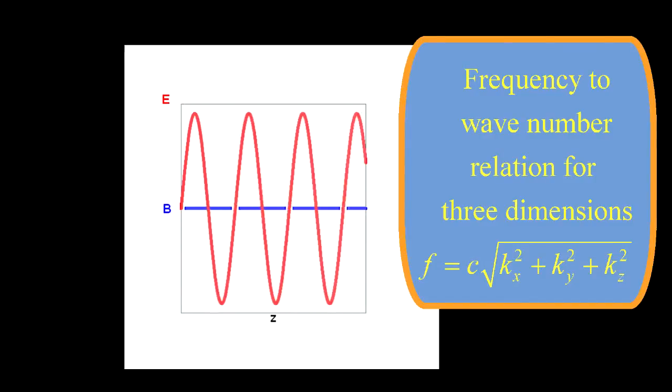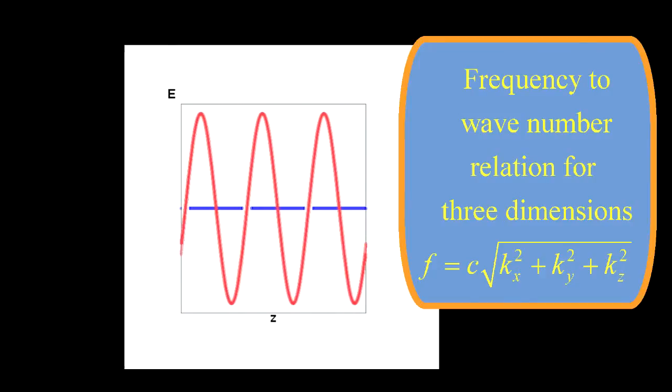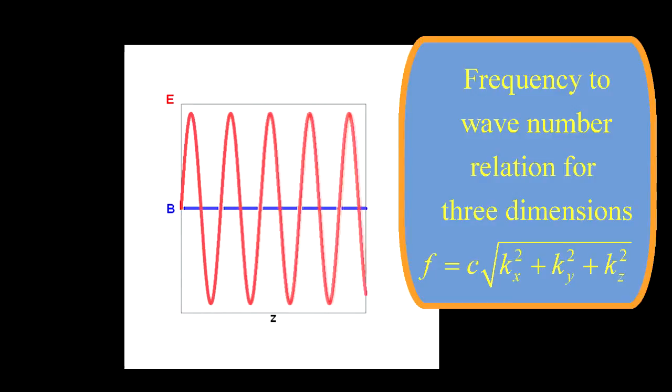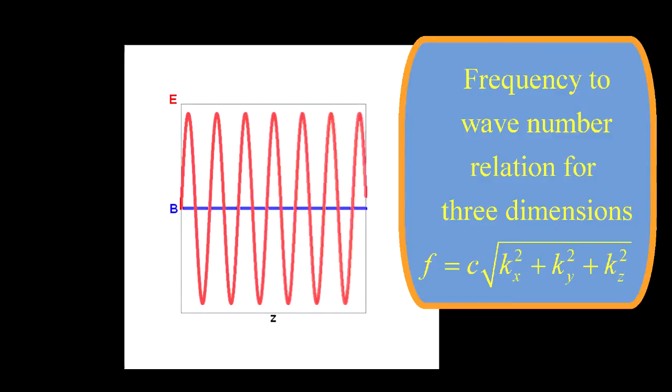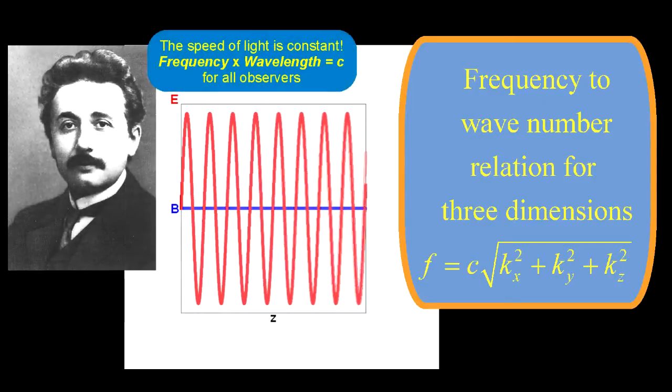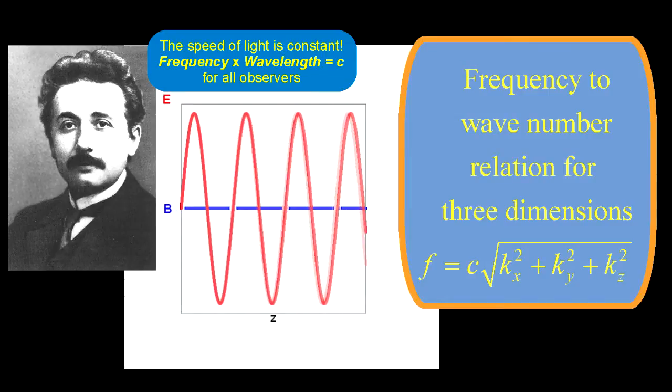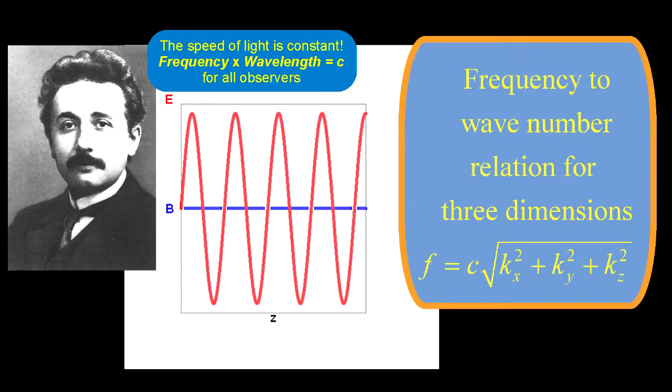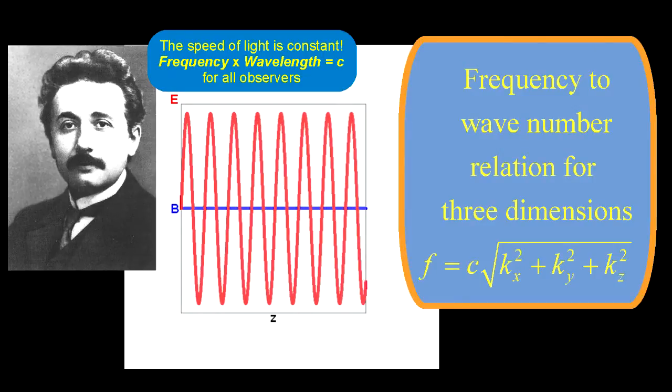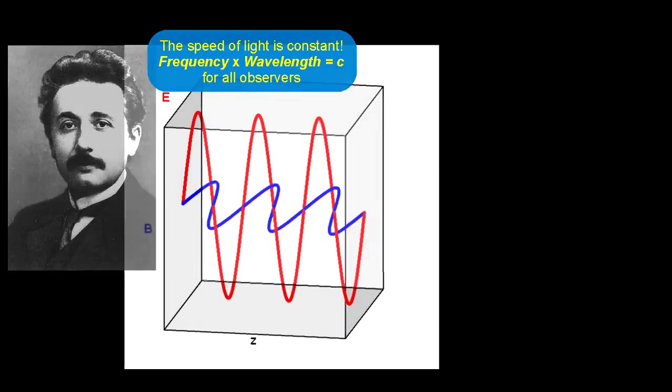The constant c is the speed of light, which does not vary from observer to observer. That's completely different from sound waves and water waves, where the relationship depends on how fast you're moving relative to the wave. This was the key observation that Einstein used to develop his special theory of relativity, which is another great story. We aren't telling that story, but we do need to know that frequency and wave number are related by the fixed constant known as c, the speed of light.